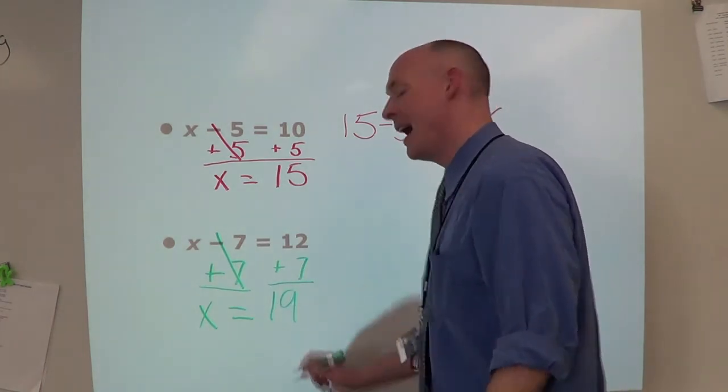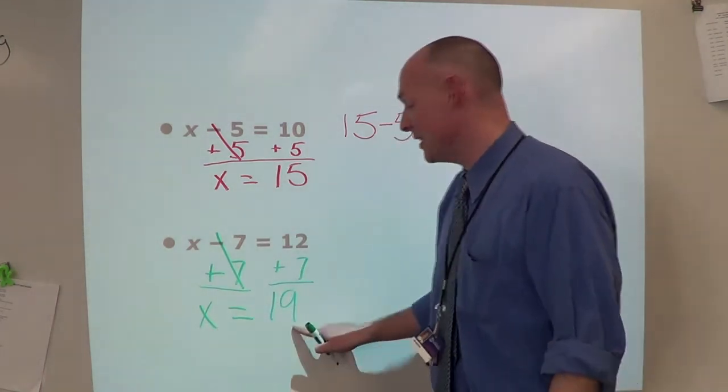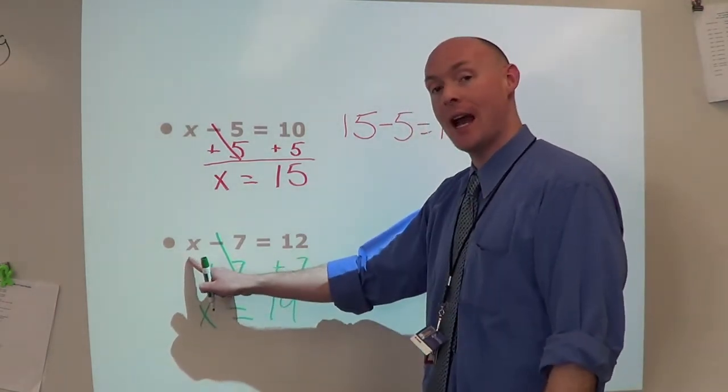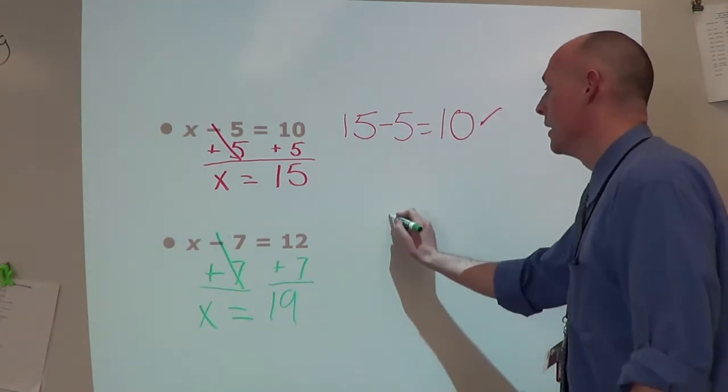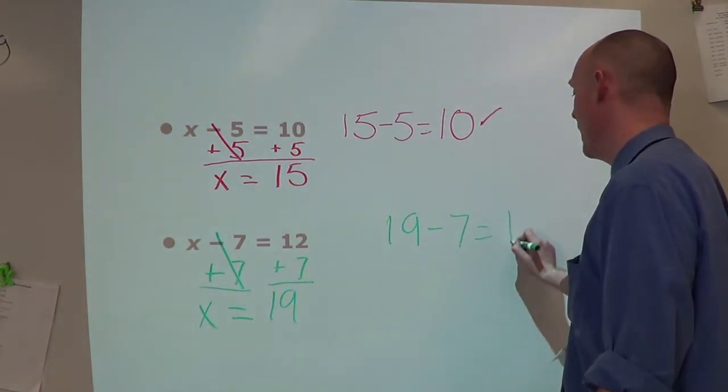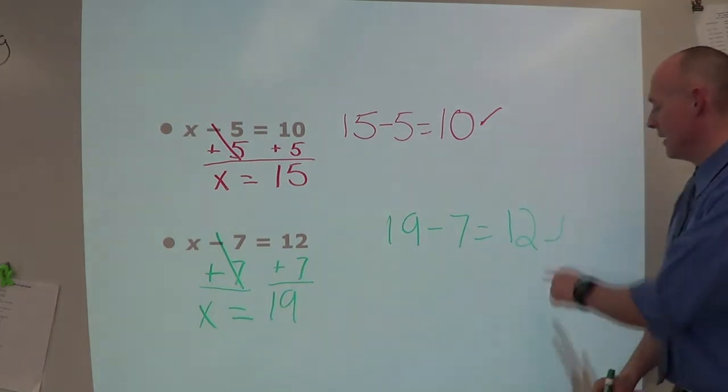x equals 12 plus 7, which is 19. I think the answer is x equals 19. The only way to be sure is to plug that 19 in for the x. Let's try it: 19 minus 7 equals 12. Is that a true statement? It is - check mark, we're good to go.